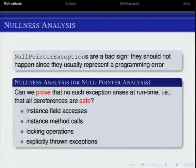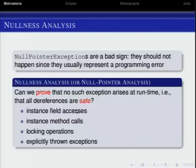There are many situations when this can arise: when you access a field, when you call an instance method — no problem with static methods — when you do a lock operation for multi-threaded operations, or when you throw an exception that is itself null. So there are four situations basically where you can have a null pointer exception in Java.